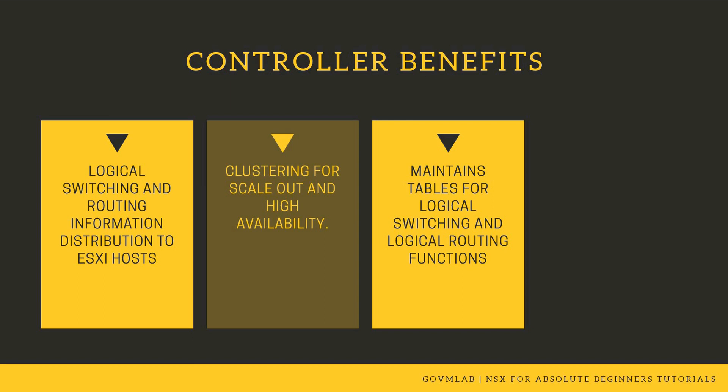Since NSX controllers maintain the true state of NSX networking, they maintain a couple of important tables which are required for logical switching and logical routing to work. Those tables are known as the VTAB table, MAC table, and ARP table, which are used by the controller for packet forwarding and packet lookup.